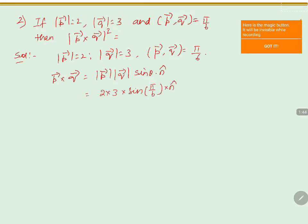Since n̂ is a unit vector, we compute 2 into 3 equals 6, and sin(5π/6) equals sin(30°) equals 1/2. So 6 into 1/2 gives 3. Therefore P vector cross Q vector equals 3 n̂.